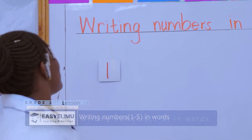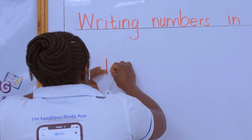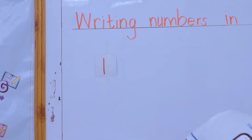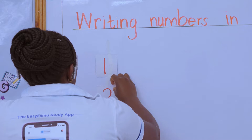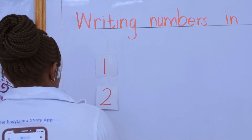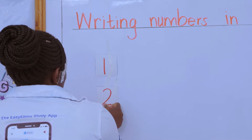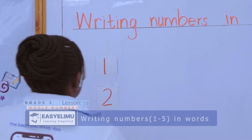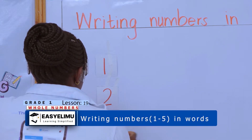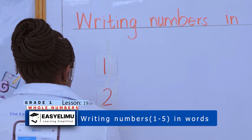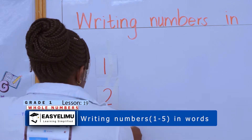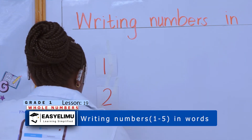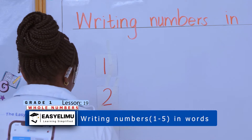We said one looks like a stick. Which number follows one? Number one is followed by number two — that is how we write the symbol for number two. Which number follows two? The number that follows two is the number three, and that is the symbol for number three. After three we have the number four — number four follows number three.